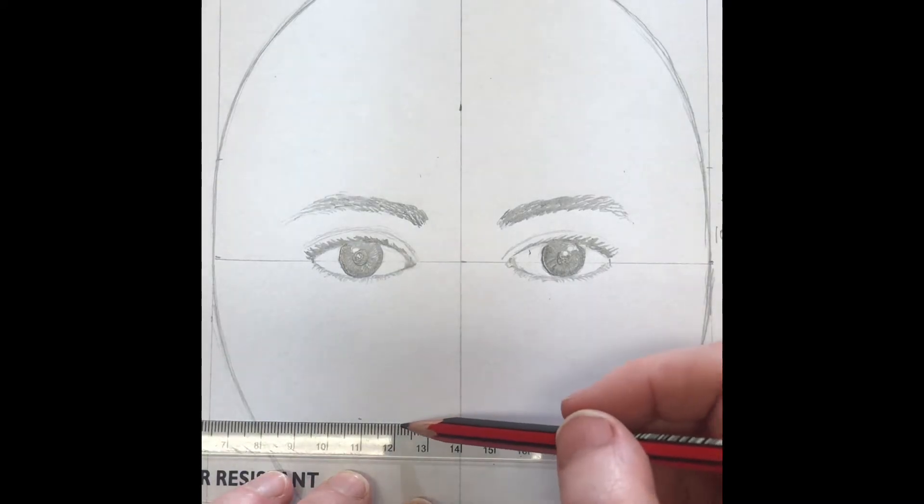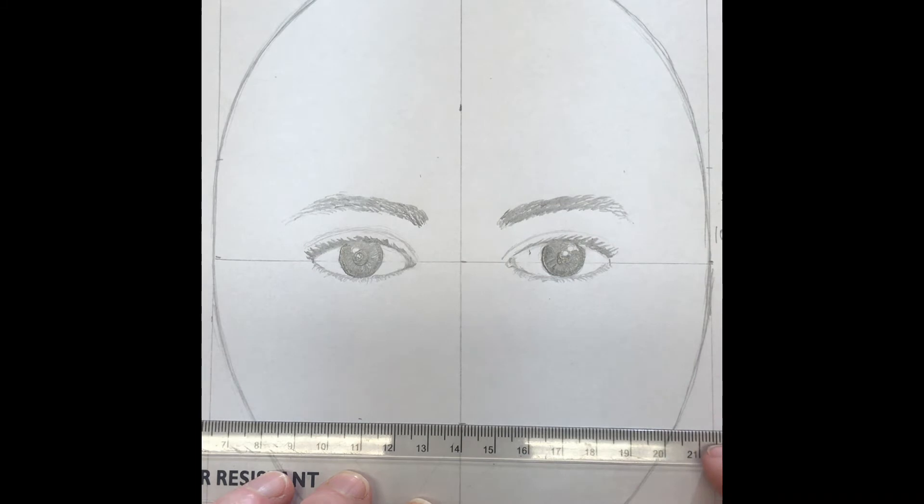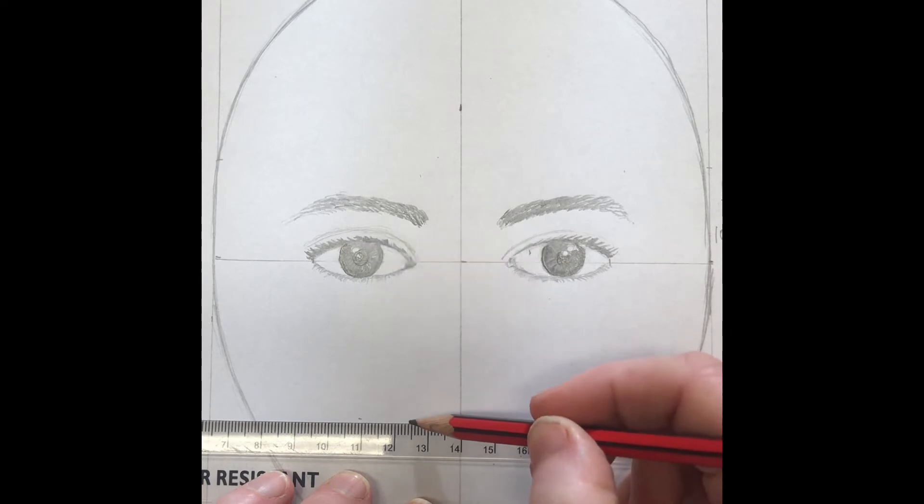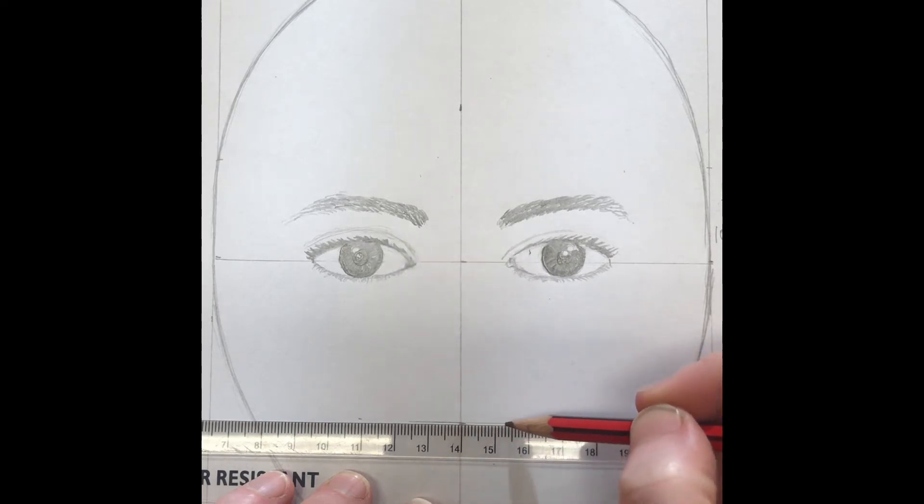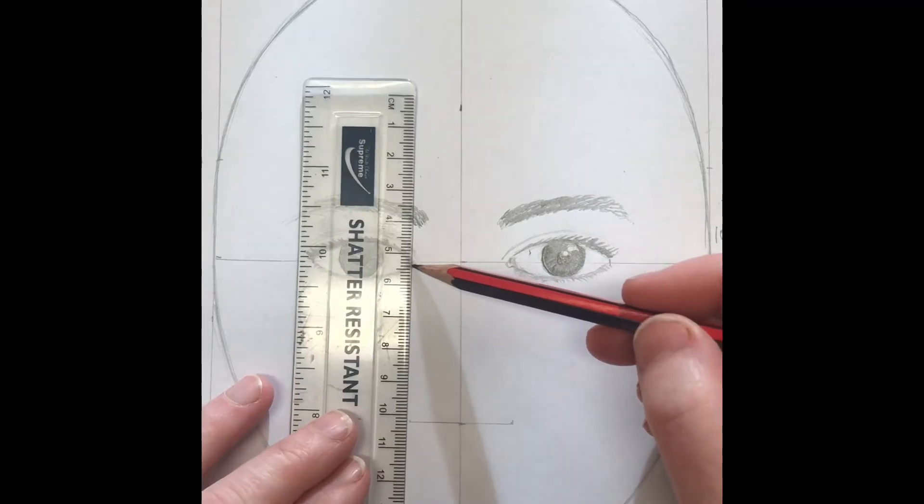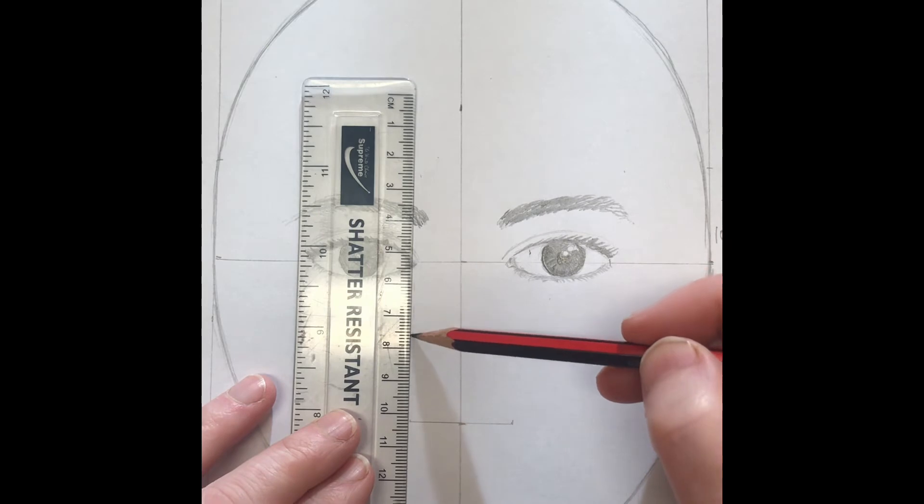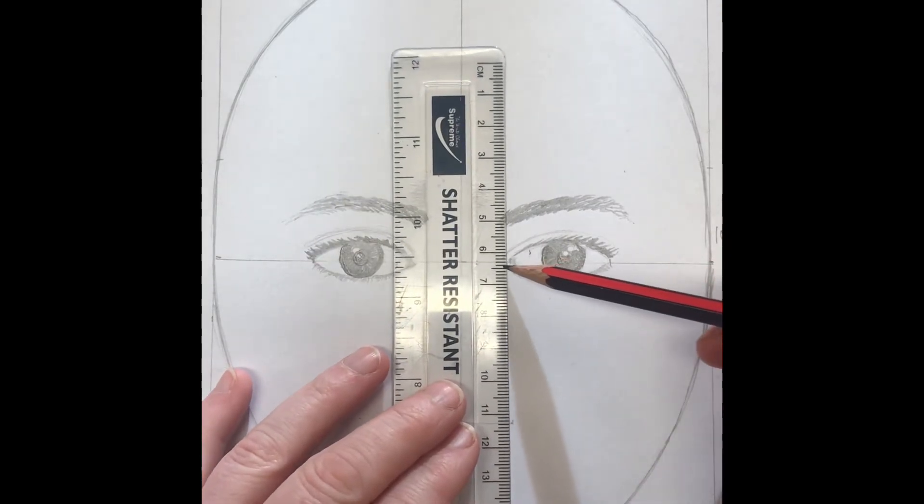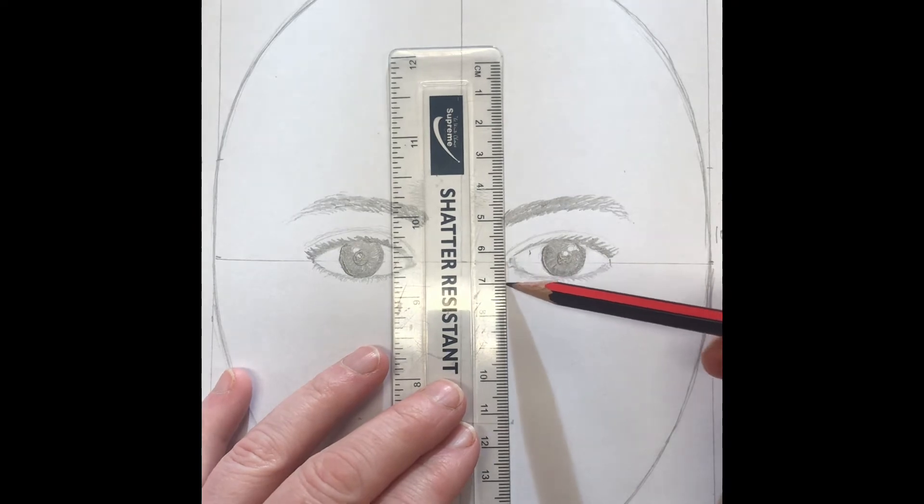Next we're going to be drawing the nose. As the face is 20 centimeters long and the nose is three quarters of the way down the face, then measure from the middle line down by five centimeters. Next, draw two lines straight down from the inner corner of the eye to meet this line. This is where your nose is going to take place.